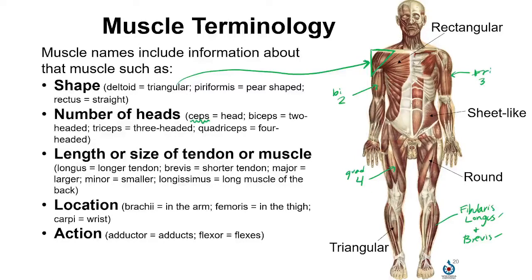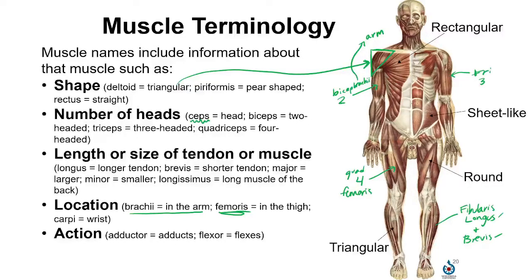The muscle name may also tell you something about its location. For instance, the biceps brachii — brachii refers to arm. And then we have quadriceps femoris, where femoris refers to the thigh. Finally, the action of a muscle may be directly in the name, such as the adductors of the thigh or the flexors of the forearm.